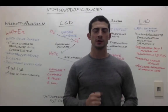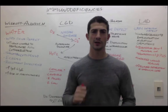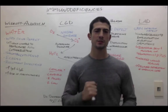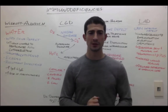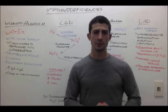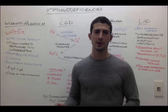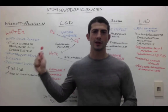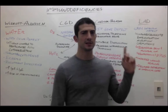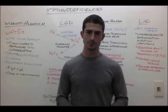This is the second video on immunodeficiencies. In the first video, we covered severe combined immunodeficiency, Bruton's agammaglobulinemia, and common variable immunodeficiency. In this video, we're going to cover Wiscott-Aldrich, chronic granulomatous disease, Chediak-Higashi, and leukocyte adhesion deficiency.